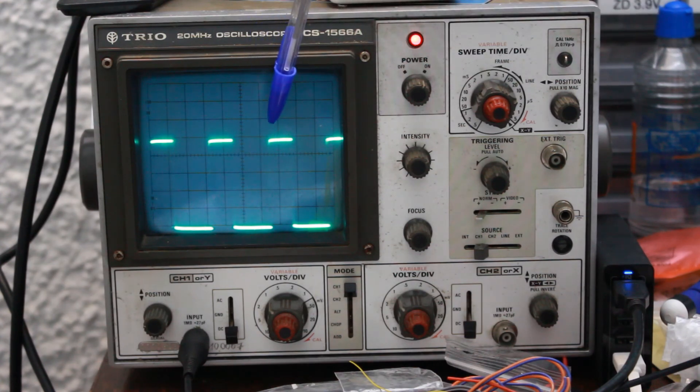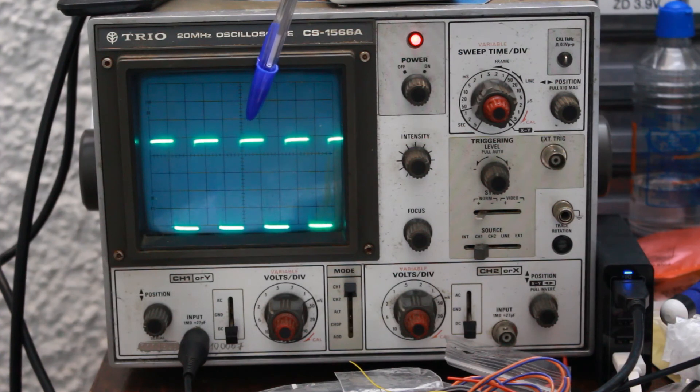Whenever the rising edge occurs later than the center of the screen, I'm pressing the button. When it occurs sooner, I release the button. And in this manner, based only on observing the timing of this edge compared to the center of the screen, I can make the oscillator average 40kHz, the frequency we're aiming for.